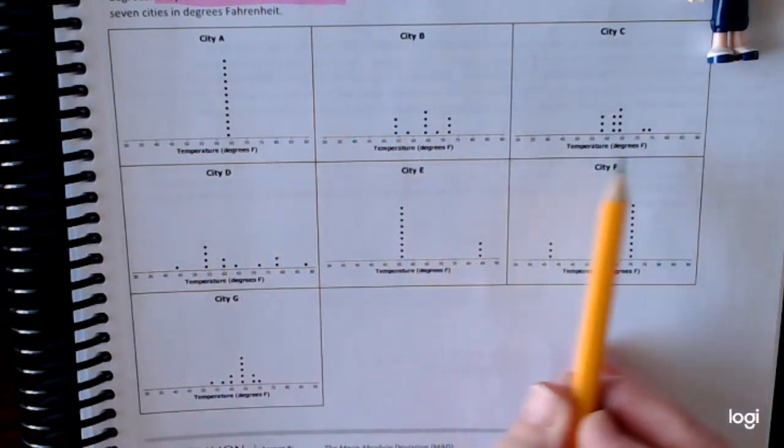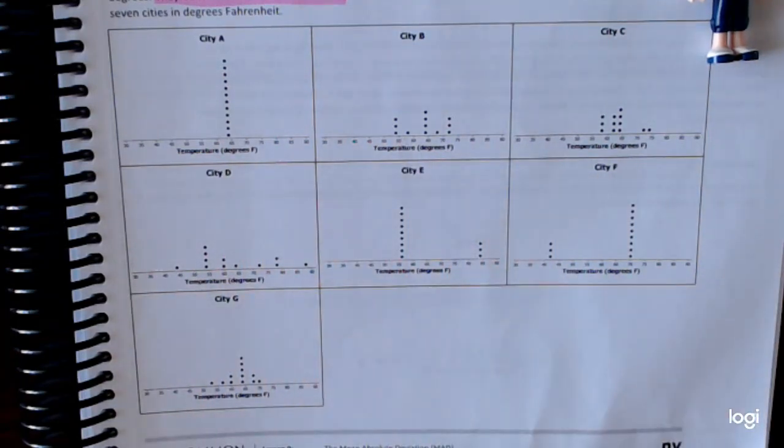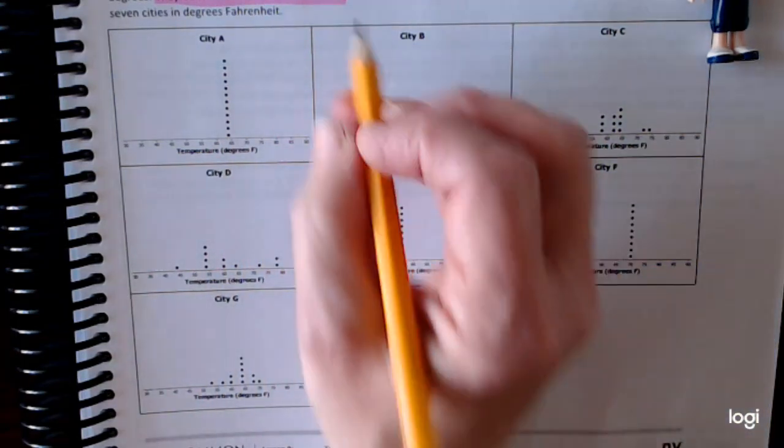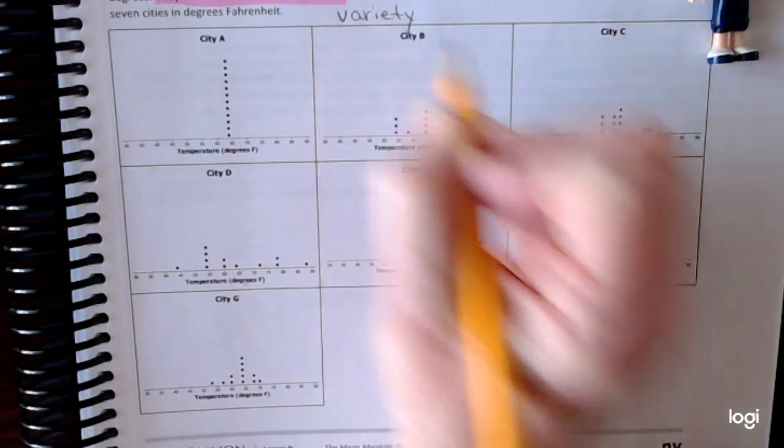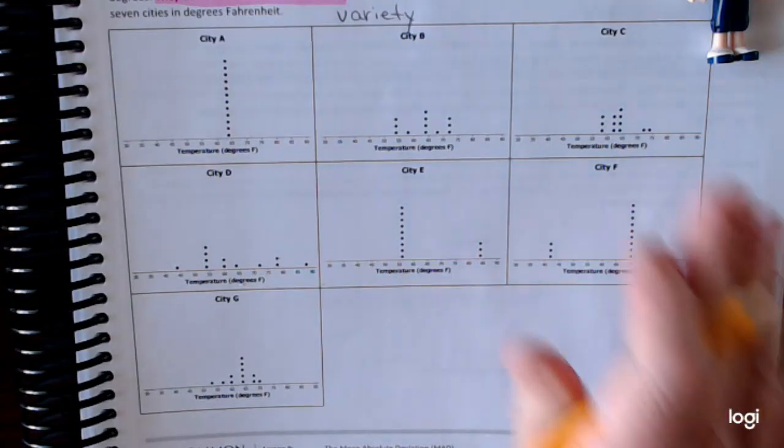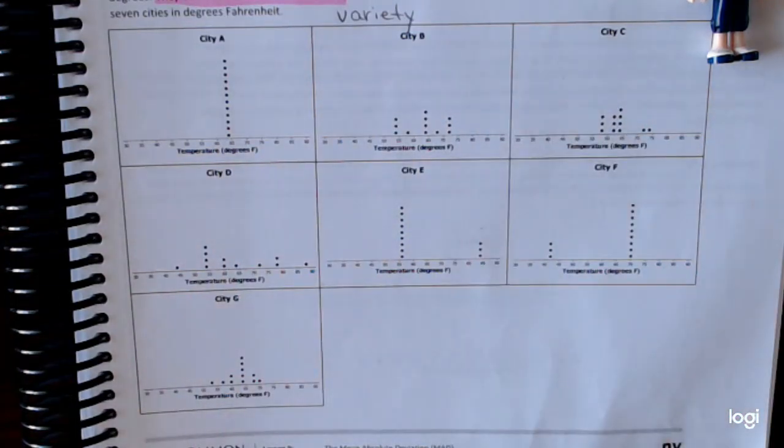I want you to look at them and decide which one of these cities has the least amount of variability. Or I always like to use this trick word here called variety. Which one of these has the least variety? Tell me which city you think it is and why.